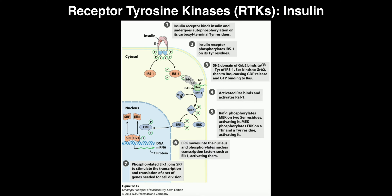RAF-1 phosphorylates MEK. You can see MEK come in and become phosphorylated. When MEK becomes phosphorylated, it becomes activated, and it itself is a protein kinase. When MEK is activated, it phosphorylates ERK. ERK comes in, gets phosphorylated by MEK, and now has a couple of phosphates on it. When ERK gets activated, it goes into the nucleus and phosphorylates some transcription factors.